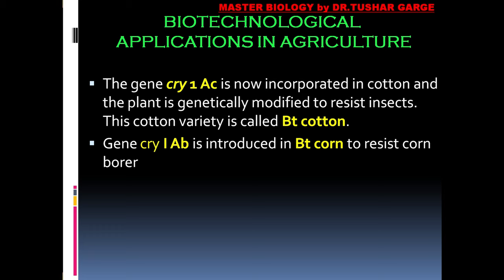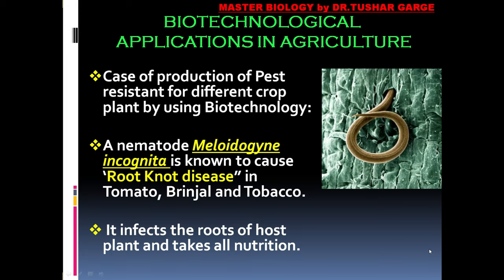Do tarah ke cry genes hain: cryIAc aur cryIAb. CryIAc cotton mein incorporate kiya gaya hai aur BT cotton naam ki nayi plant variety establish hui hai, jabki cryIAb gene BT corn mein daala gaya hai aur corn borer ko woh resist karta hai. Yeh ek aur classical example hai application of biotechnology in agriculture.